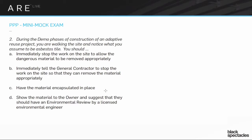Question number two: during the demo phase of construction of an adaptive reuse project, you are walking the site and notice what you assume to be asbestos tile. Adaptive reuse is when an existing building had one use and is now becoming something else, like an old loft building becoming residential lofts. These projects have a different schedule because there's often stuff you don't know about the building until you start demo, so new environmental issues like this can arise.